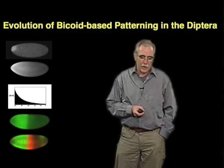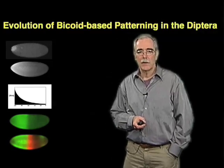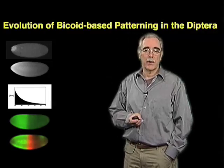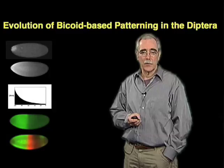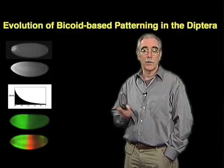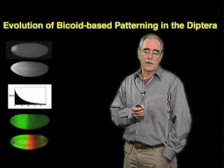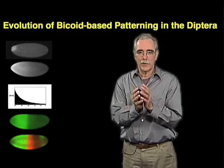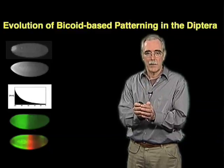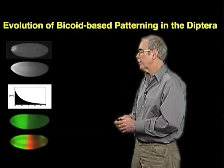Now, we've seen that if you examine this gradient in Drosophila embryos, or if we examine the expression of the downstream targets, we see that they're extraordinarily constant from one embryo to the next. And this is probably what you want if you want to have a system which is establishing pattern and controlling the behaviors of individual cells in the embryo.